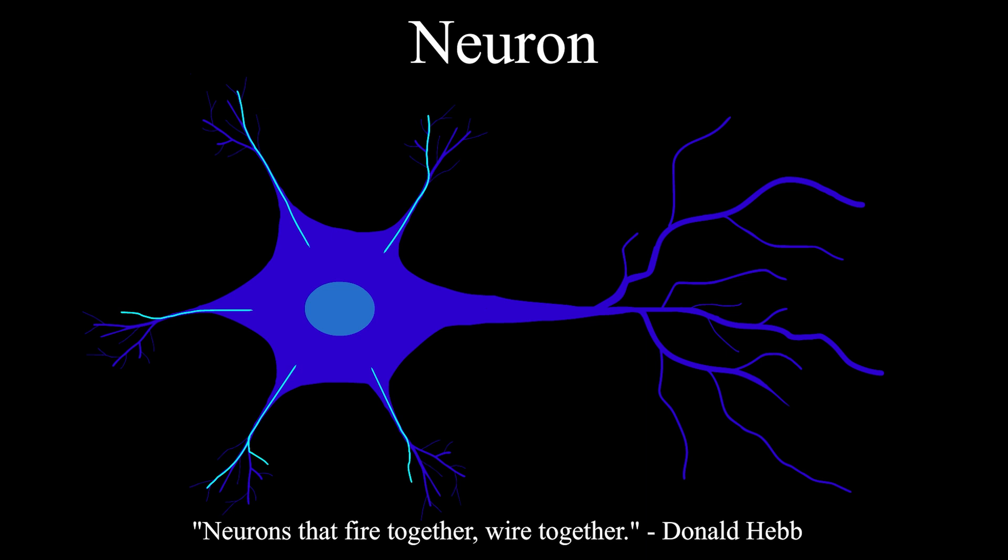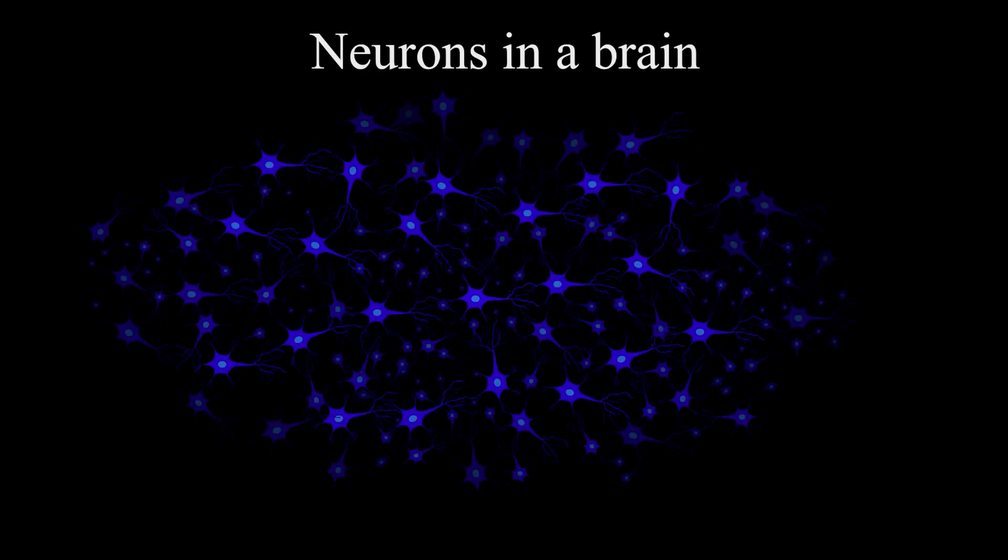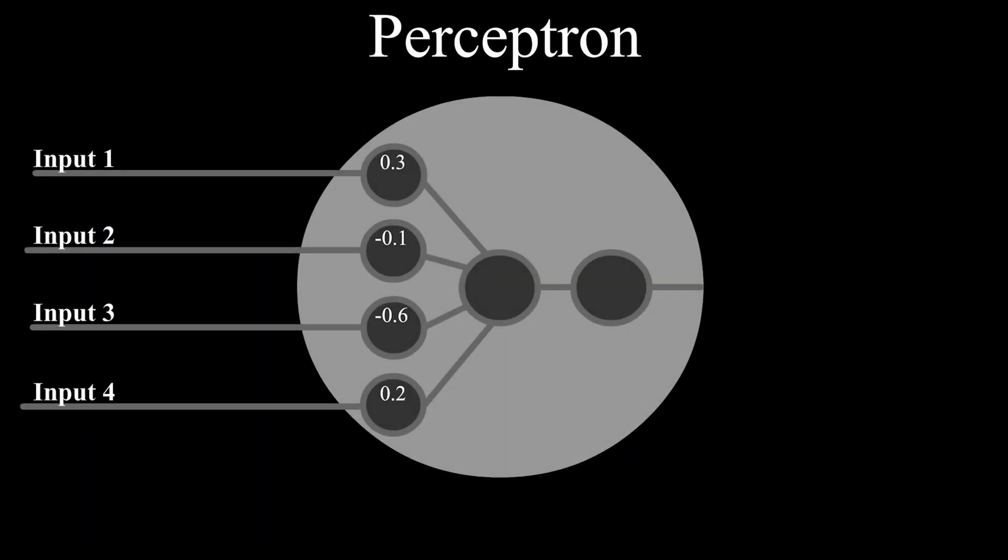When you put billions of neurons together in a network, the firing patterns create higher-level structures which result in things like consciousness and memory. The perceptron is our attempt at replicating this behavior with machines. We simulate a neuron by inputting numbers, multiplying those numbers by weights, summing them up, and outputting 0 if the sum is negative or 1 if the sum is positive.